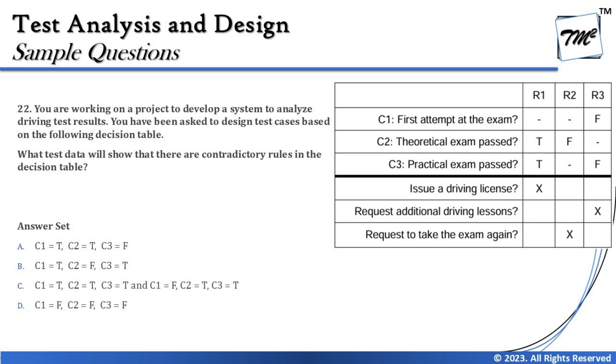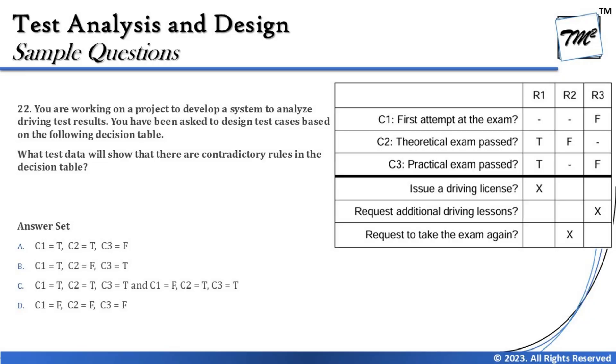The question asks: what test data will show that there are contradictory rules in the decision table? To keep it simple and straightforward, all you have to do is pick up the options, put them back into the table across all three rules, and see where each fits. If putting a value into a rule creates a copy of an existing rule, that indicates a contradiction. The option that creates a duplicate with a different action is what we're looking for.